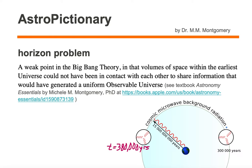The horizon problem is a weak point in the Big Bang theory, in that volumes of space within the earliest universe could not have been in contact with each other to share information that would have generated a uniform observable universe.